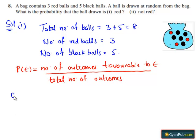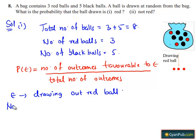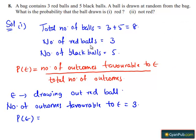Let E be the event of drawing out red ball, then number of outcomes favorable to event E equals to 3. Then P of E equals to number of red balls that is 3 whole divided by total number of balls which is 8. Therefore, the probability that the ball drawn is red is 3 whole divided by 8.